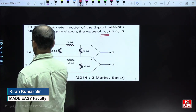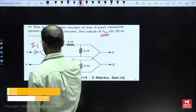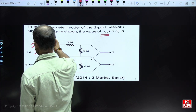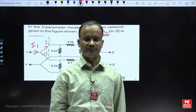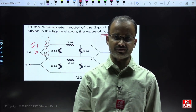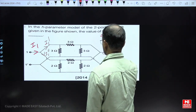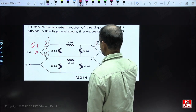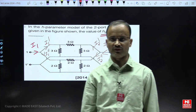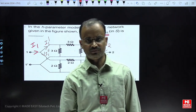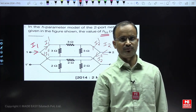If I1 current is coming in, it distributes as I1-dash and I1-double-dash — that means current division is present at the input, which corresponds to a parallel connection. Similarly, on the output side, I2 current distributes as I2-dash and I2-double-dash, so current division is present at the output also. Input parallel, output parallel — we conclude that the two two-port networks are connected in parallel.